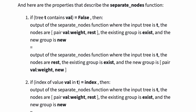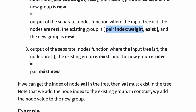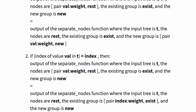Here are the properties that describe the separate nodes function. Property one: if the expression tree(t) contains val is equal to false, then we pop from the nodes and we push it to the new group. Property two says that if the index of value val in t is equal to index, then we once again pop from the nodes, but this time we push to the existing group. Property three says that if the nodes are empty, then the output of the separate nodes function is equal to the pair (exist, new). Note that if we can get the index of node val in the tree, then val must exist in the tree, and we add the node index to the existing group. In contrast, we add the node value to the new group.